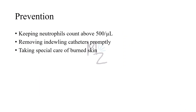Prevention: keeping the neutrophil count above 500 per microliter is important, as a count below 500 per microliter indicates immunosuppression, making the patient susceptible to Pseudomonas infections. Other measures include removing indwelling catheters, taking special care of burned skin, and similar measures to limit infections in patients with reduced host defenses.